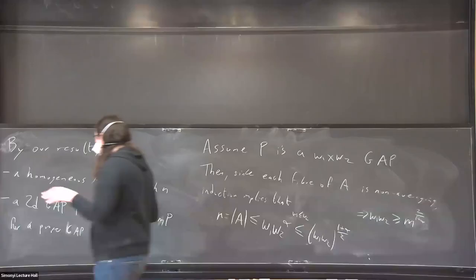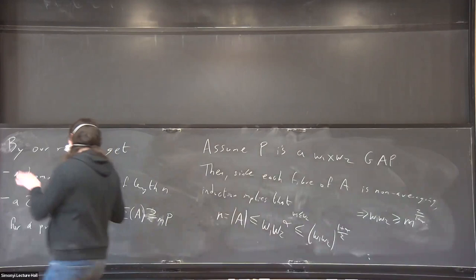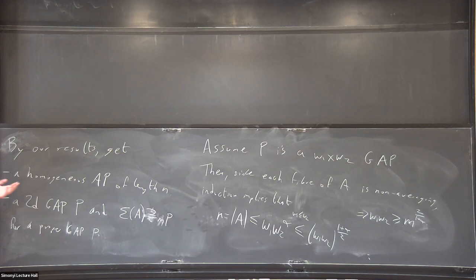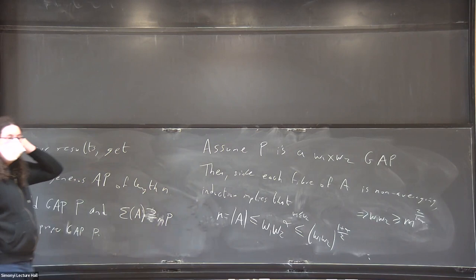So that's basically where the number comes out of — it's a fairly simple-minded application of this lemma. You need to be a little bit more careful because we're dealing not with A but with the subset A', but essentially you only lose some log factors and end up with the same thing.